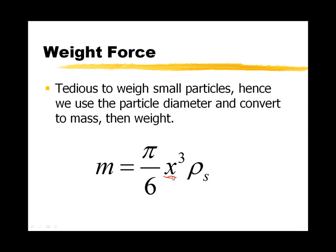If we convert the diameter to a volume by cubing it and then multiplying by a volume shape factor, we can simply convert that to a mass by multiplying by the solid's density. This gives us the mass of a particle, which, if we multiply by the acceleration due to gravity, gives us the weight.